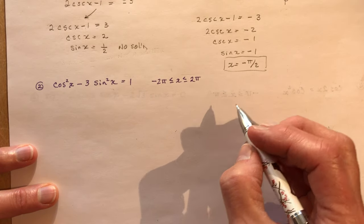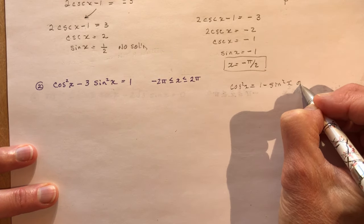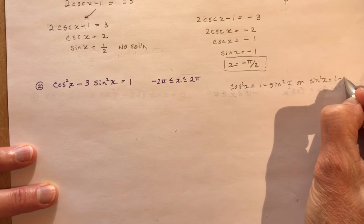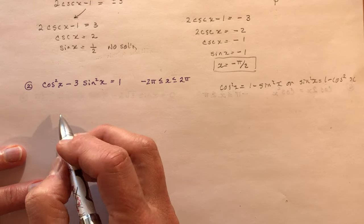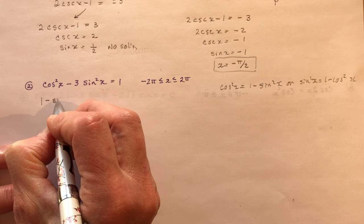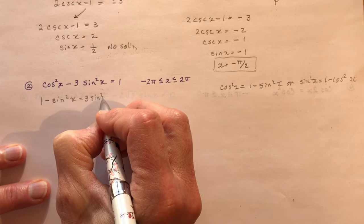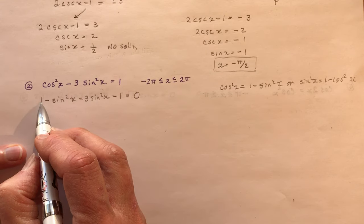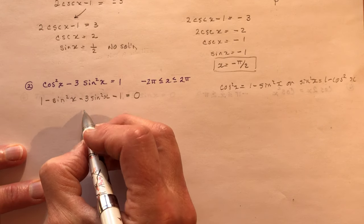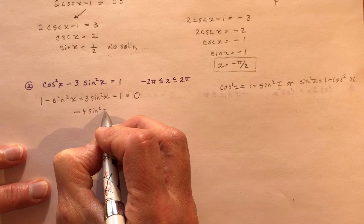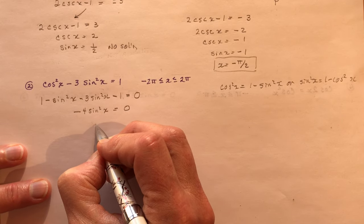You can say cosecant x equals 1 minus sine squared x, or sine squared x equals 1 minus cosecant x. I'll try the first one. Substituting gives 1 minus sine squared x minus 3 sine squared x minus 1 equals 0. The 1s cancel, and minus sine squared x minus 3 sine squared x gives minus 4 sine squared x equals 0, which simplifies to sine x equals 0.